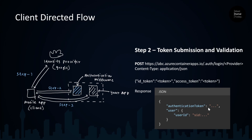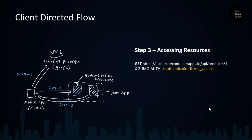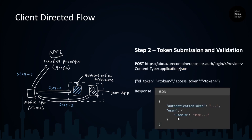The third step is actually accessing the resources. We send a GET request to the container app host with the HTTP path of the API. We need to pass in the header `X-ZUMO-AUTH`, which should contain the authentication token received from the authentication middleware. The response from the middleware in Step 2 contains the token we should use as the header value for the actual access request.